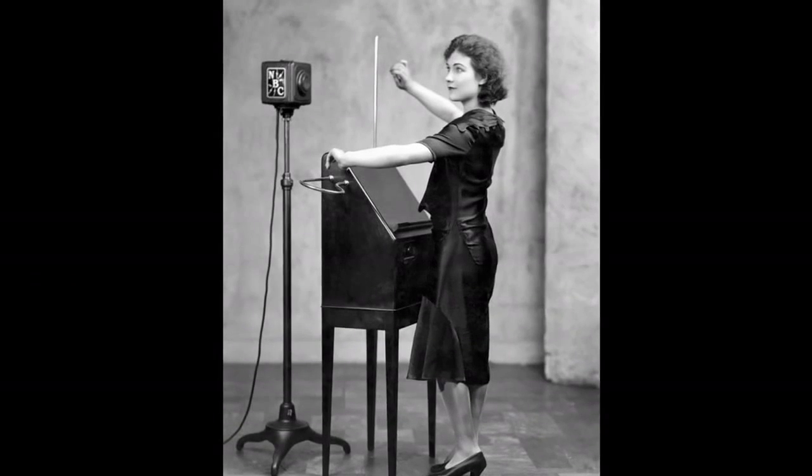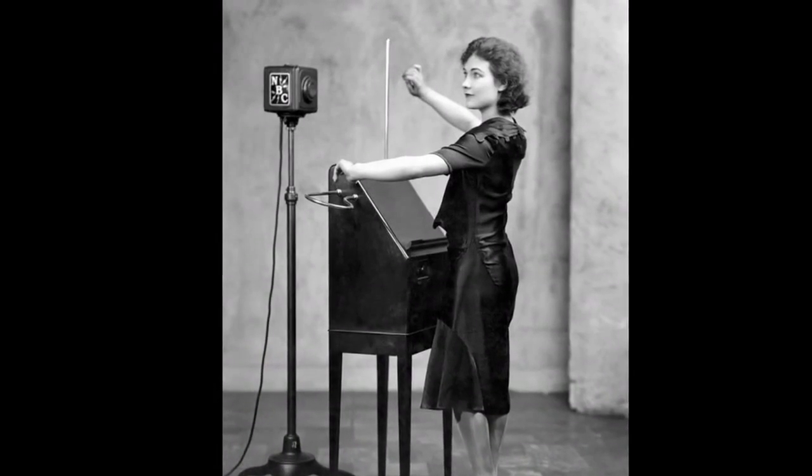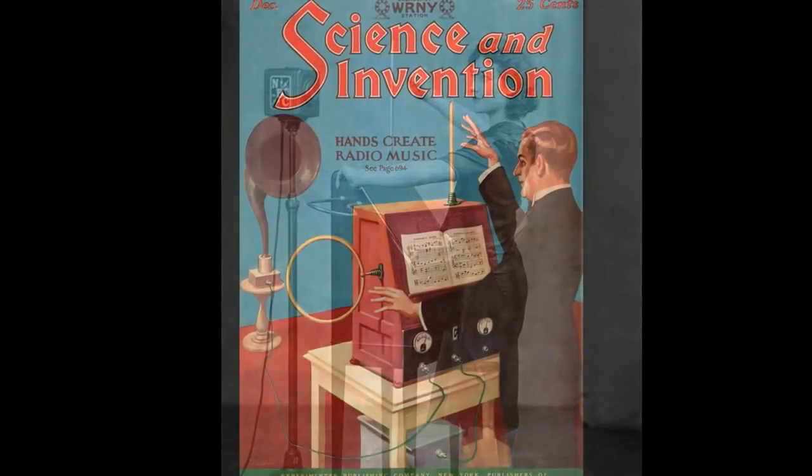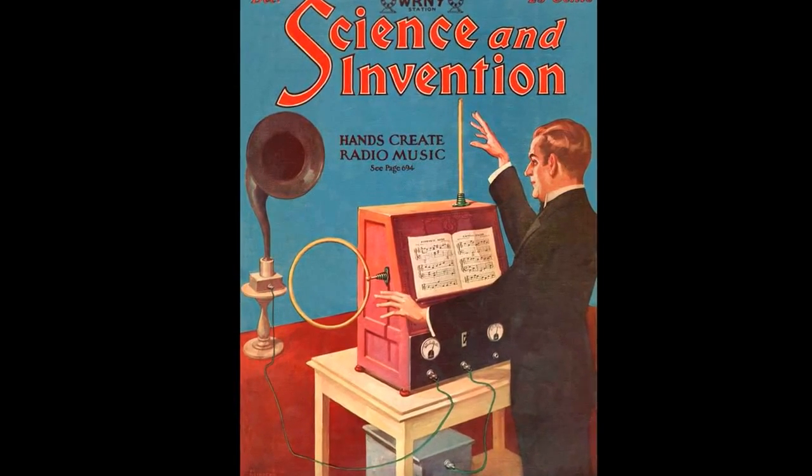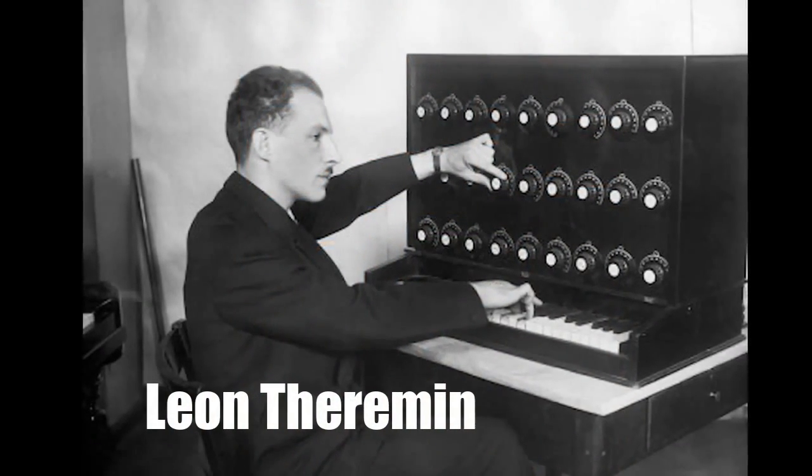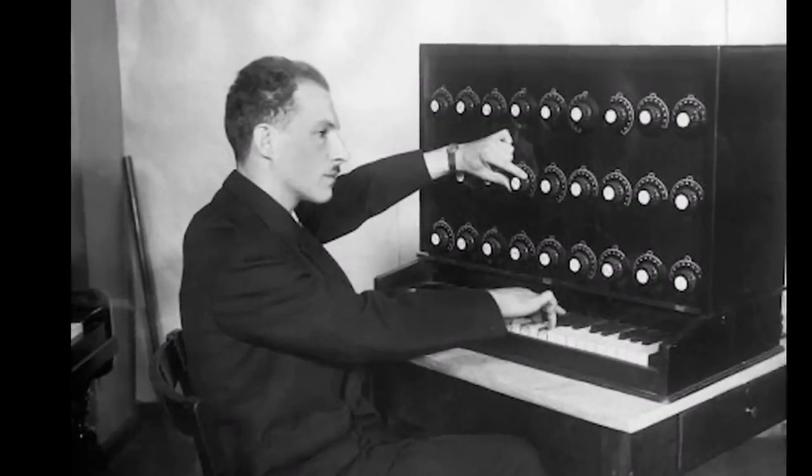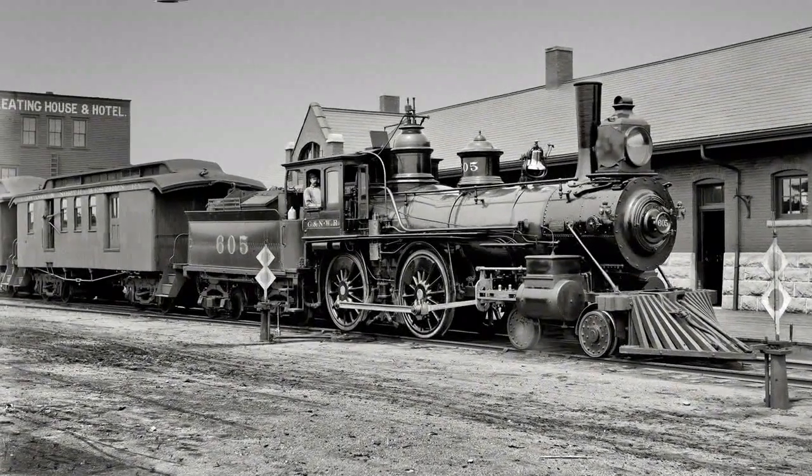The theremin is a remarkable musical instrument for two reasons. First of all, it's one of the earliest electronic instruments, a kind of Ur-synthesizer that paved the way for all the electronic music we hear today. It was invented in 1919 by Leon Theremin, and for a long time it sounded so completely unlike anything else that it would often be used in film music to represent the eerie or alien.